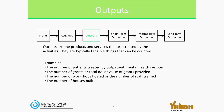The outputs are what are actually concretely produced by those activities, so they're typically things that can be quantified. For example, the number of patients treated, or the number of houses built — those are outputs that are quite clearly produced by the activities of the program.